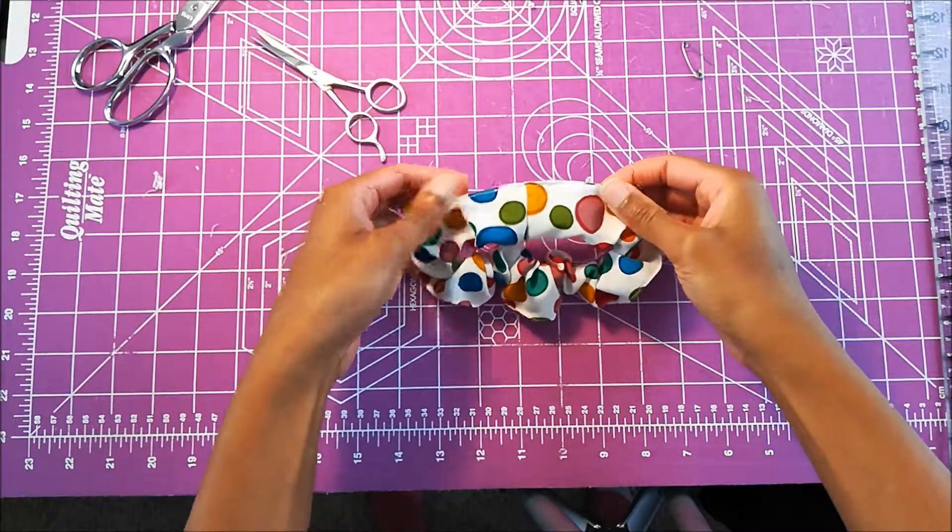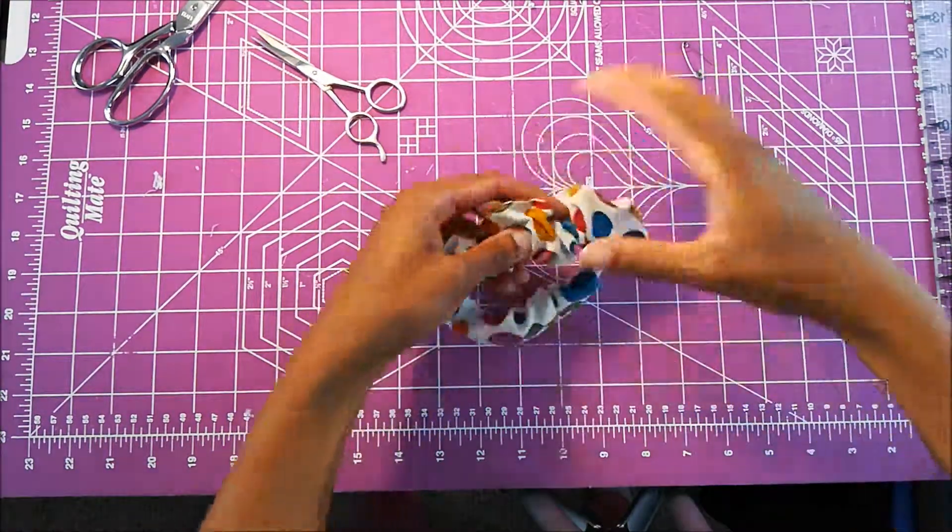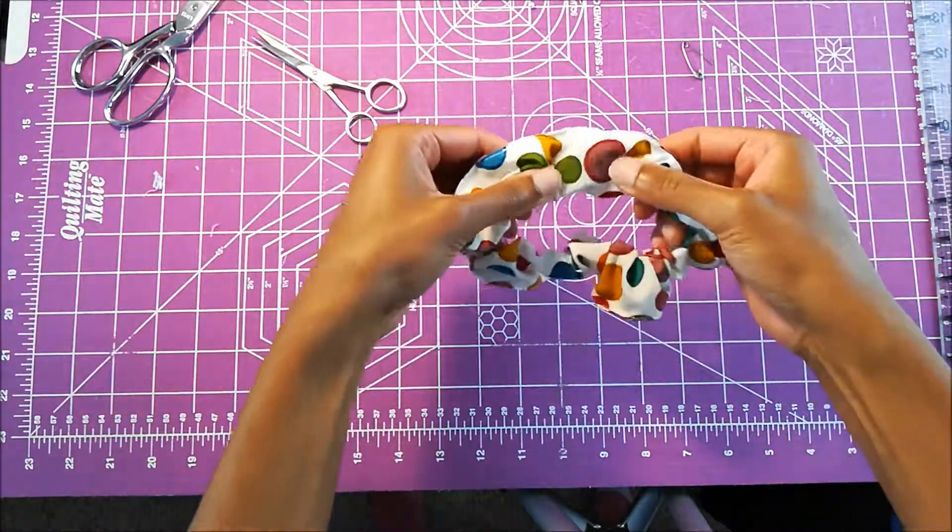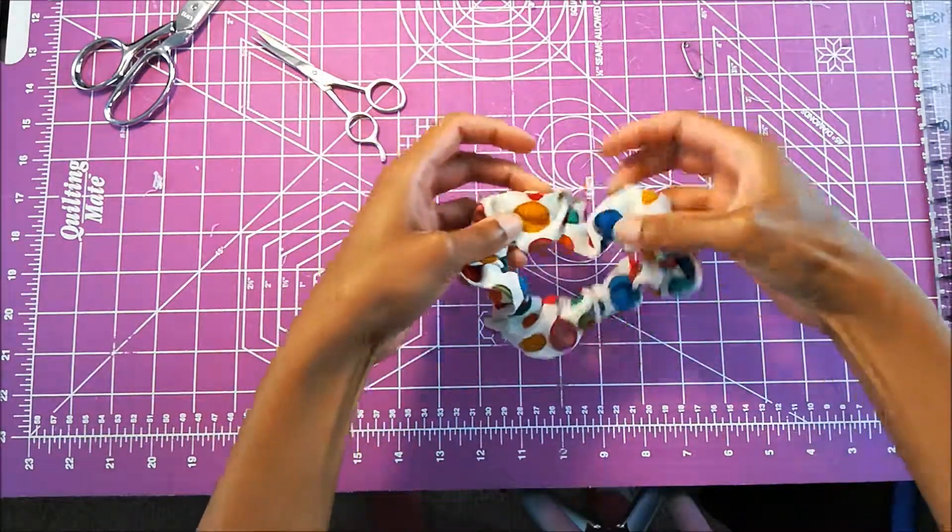Alright so the scrunchie is now closed and it is finished. Just want to move your gathers around try to spread it out pretty evenly.